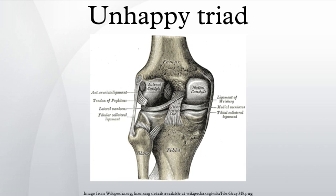During the injury, the leg is laterally rotated and over-abducted. In about 10% of cases, the force is applied to the opposite side of the knee, and the lateral and posterolateral ligaments are torn.